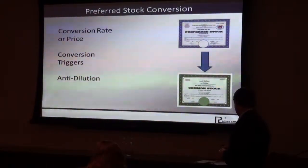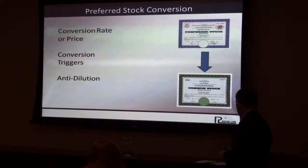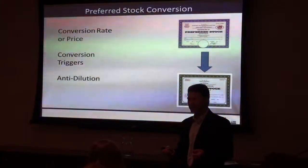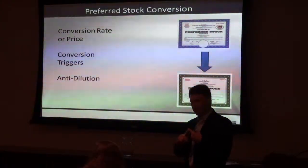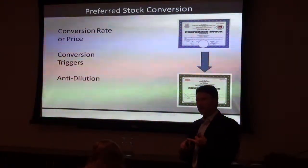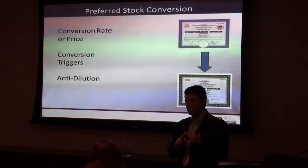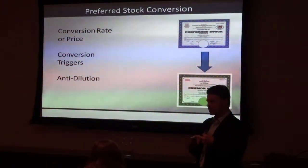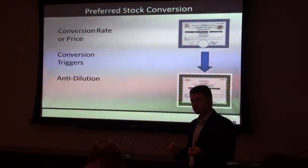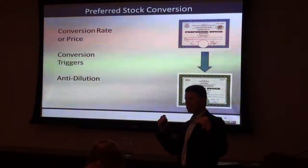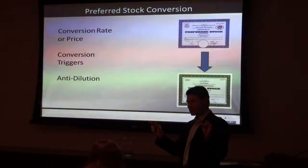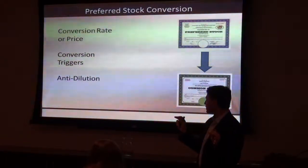Starting with the conversion rate or price — in my world, preferred always converts to common. It will convert on IPO, right before a qualified IPO (it has to be big enough), or it will convert at the election of a majority of the preferred or some other percentage, or it will automatically convert on certain other events. But usually it's IPO and then the election of the holder. You have to figure out what price it converts at. Typically, we start out with each share of preferred converting to one share of common, just to keep the numbers simple. But we usually say it has a conversion price.